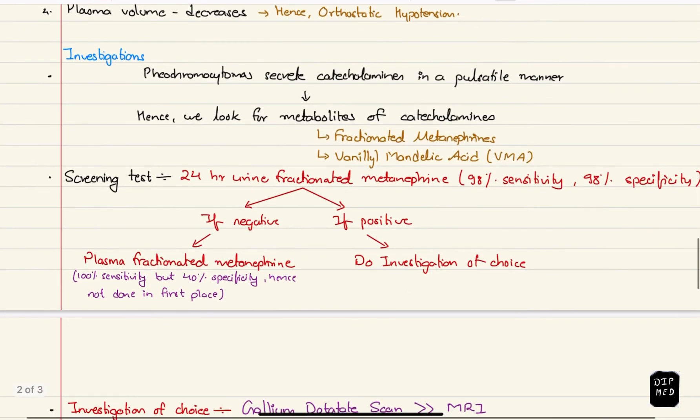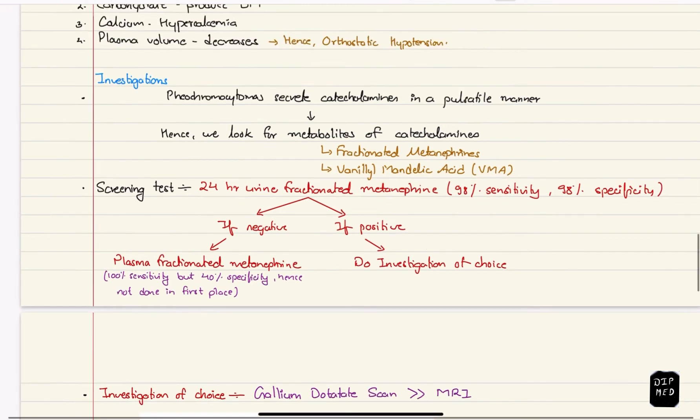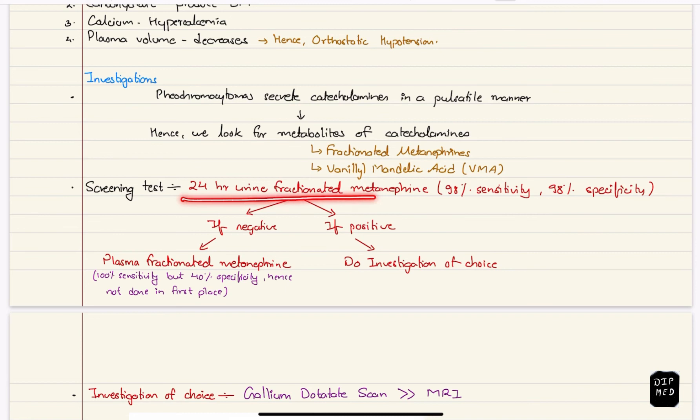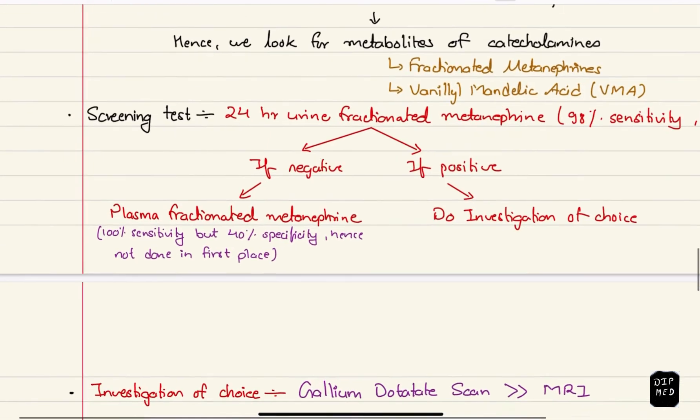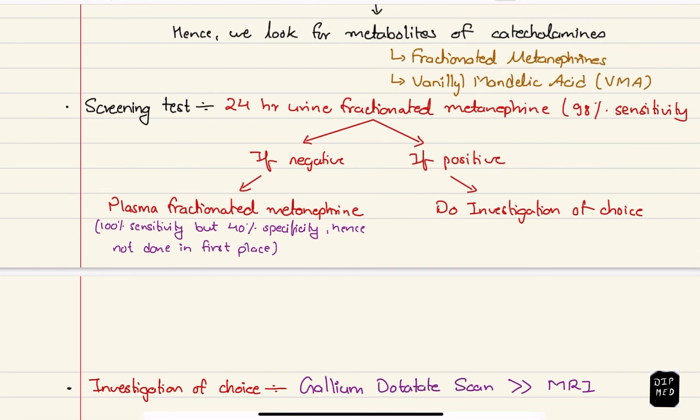Now on the investigations. Since pheochromocytoma secretes catecholamines in a pulsatile manner we do not look for catecholamines in the plasma. Instead we look for their metabolites in the urine. The metabolites are fractionated metanephrines and vanillylmandelic acid. For screening, 24 hour urine fractionated metanephrine test is done which has 98% sensitivity and 98% specificity. If the test comes negative, we do plasma fractionated metanephrine test which has 100% sensitivity but has only 40% specificity. This is the reason why we don't do it in the first place.